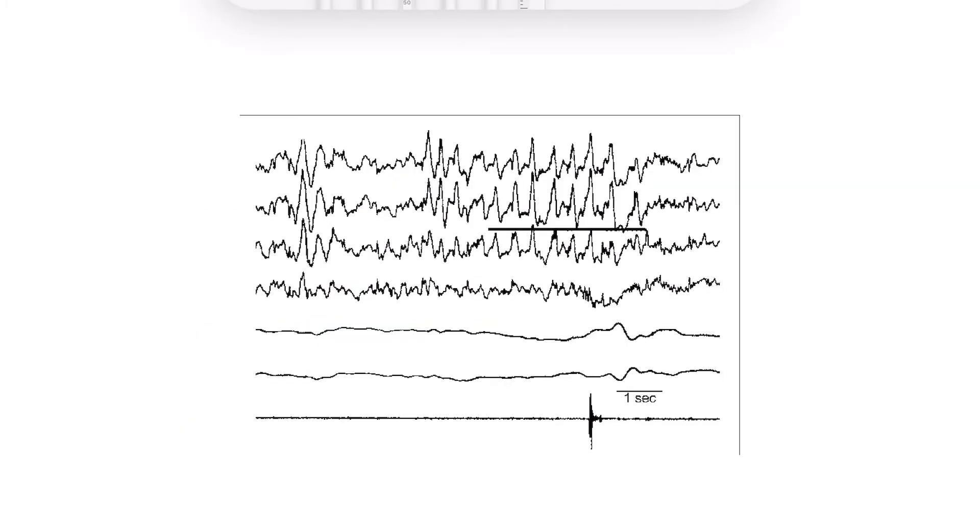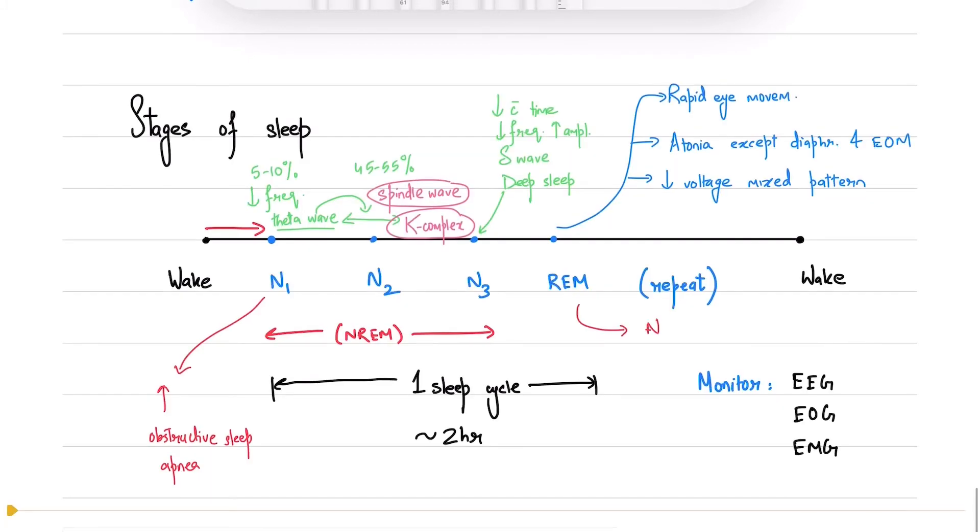Here's the EEG for REM sleep. As you can see, these waves look like saw teeth, thus the name. REM disorders are seen in narcolepsy, obstructive sleep apnea, pulmonary disease, and REM sleep behavior disorder.